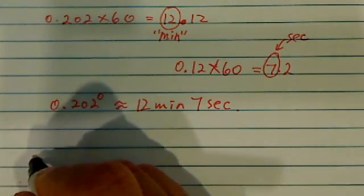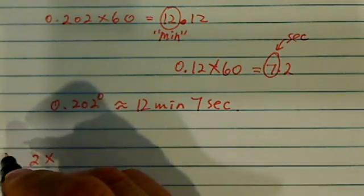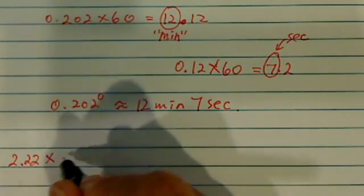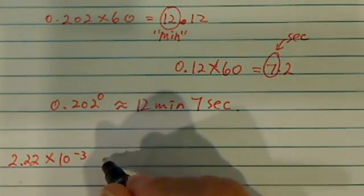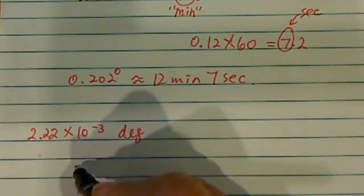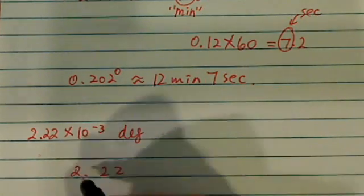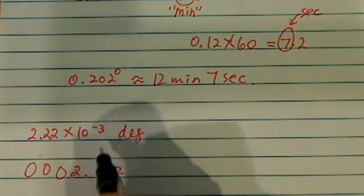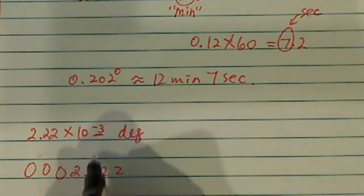Let's try another one. What if we have 2.22 times 10 to the minus 3 degrees? Now first of all, we've got to change this one into a decimal. So 2.22 and I'm going to make this number a lot smaller because it was a minus 3 here.